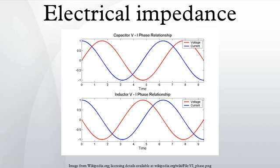Series combination: for components connected in series, the current through each circuit element is the same, and the total impedance is the sum of the component impedances. When n = 2, the equivalent impedance can be calculated in terms of the component impedances. Parallel combination: for components connected in parallel, the voltage across each circuit element is the same. The ratio of currents through any two elements is the inverse ratio of their impedances. Hence the inverse total impedance is the sum of the inverses of the component impedances. When n = 2, the equivalent impedance can be calculated in terms of the equivalent series resistance and reactance.